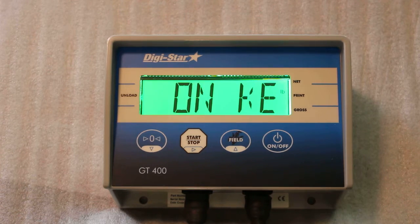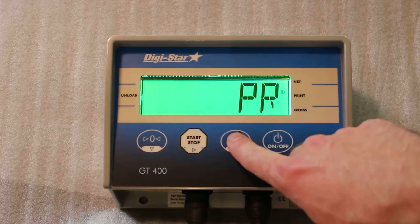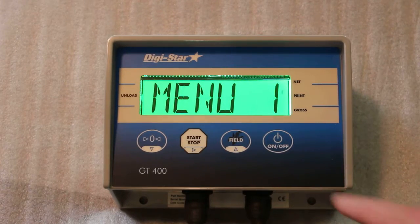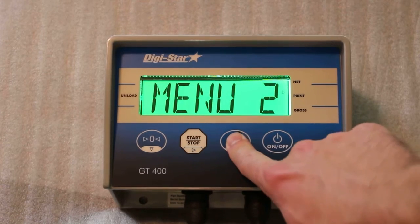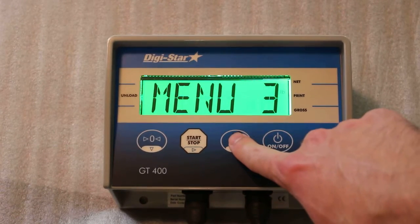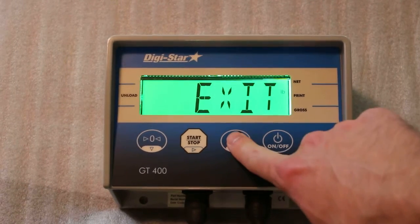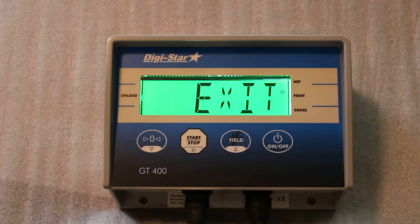I know it says it has more listed, but we'll go ahead and push the field key. There's menu one, menu two, menu three, and then four and five will be empty and it takes you into the calibration. We'll exit out of that.